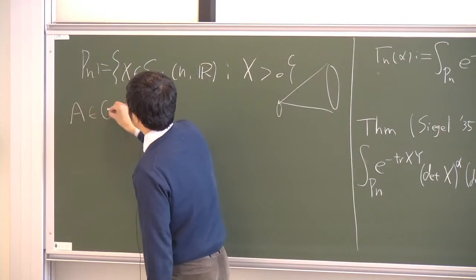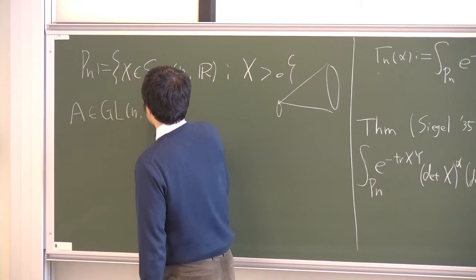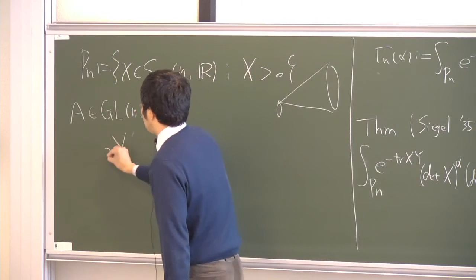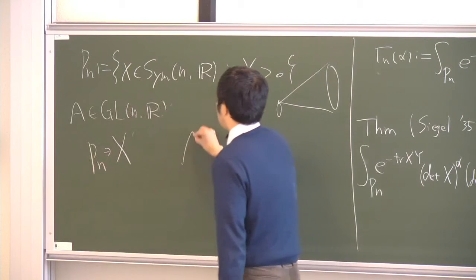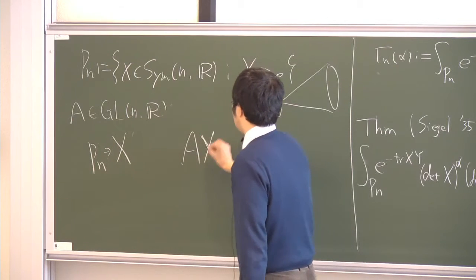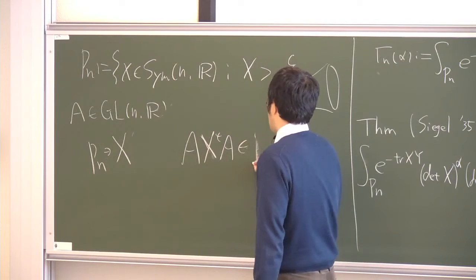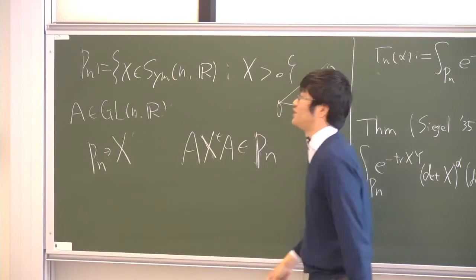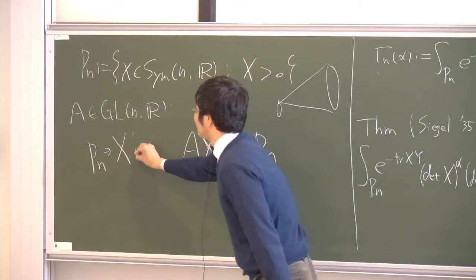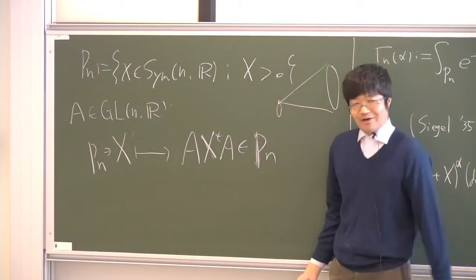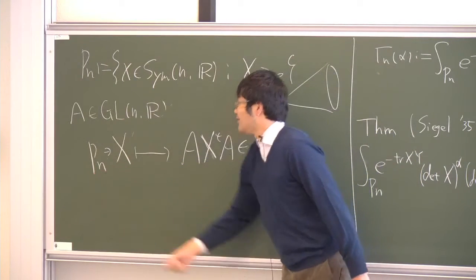For A, invertible matrix, then any positive definite X, the matrix AX transpose A is again positive definite matrix. Then we have a linear automorphism from P_n onto P_n. So I write this automorphism on the cone P_n by ρ_A.